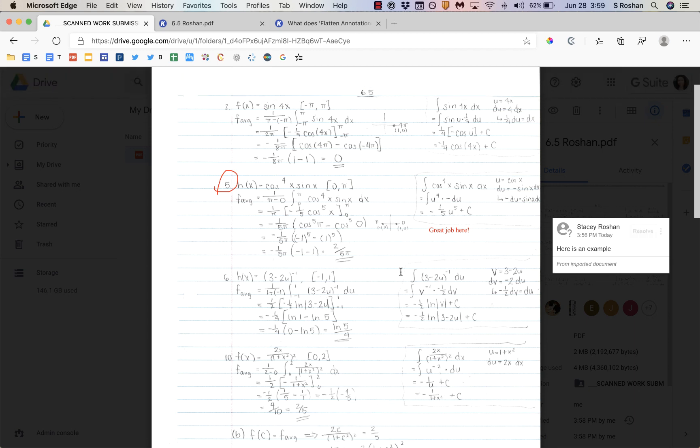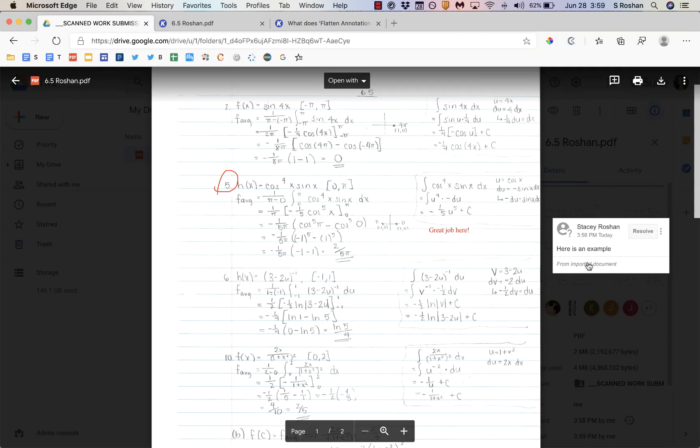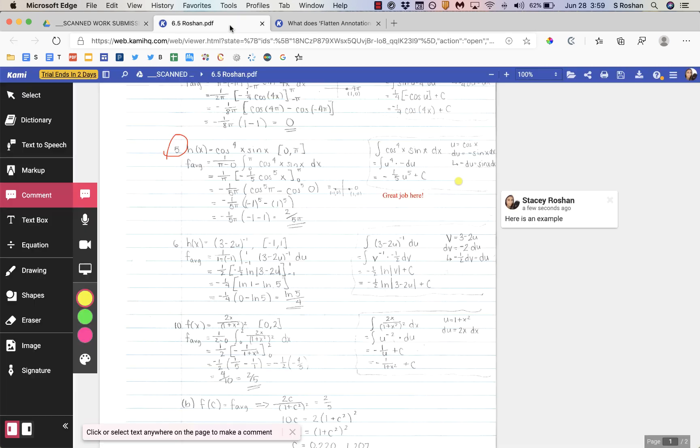However, if they're on their phone and they open it up in the Google Drive app, then this is what they see. They don't see that point comment right here. They can see all the annotations. So that's something to be aware of and to know.